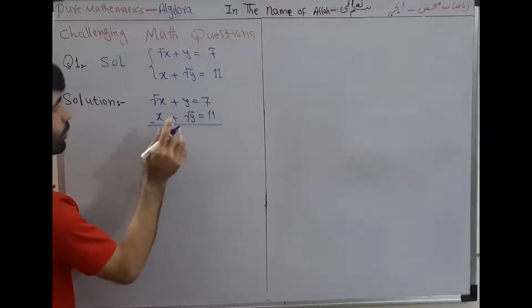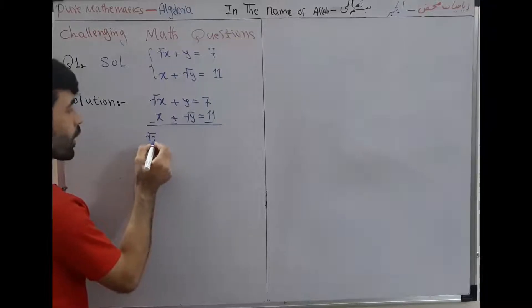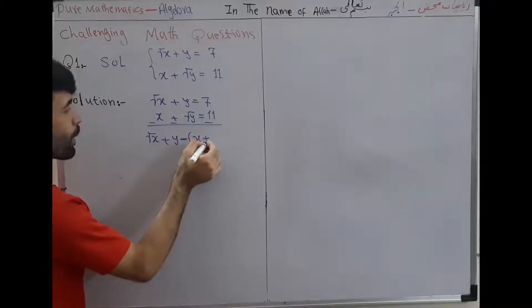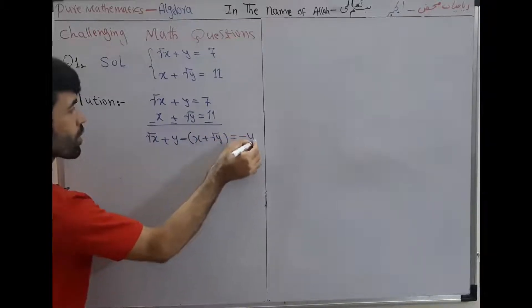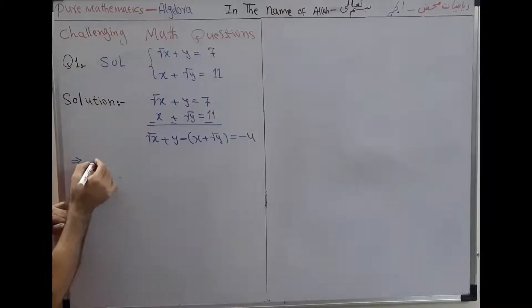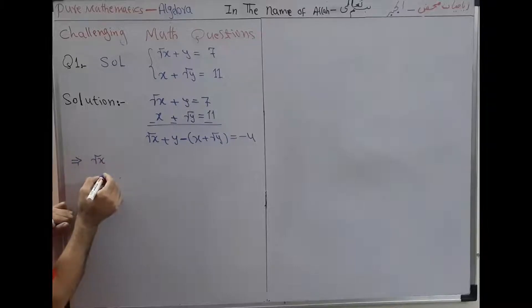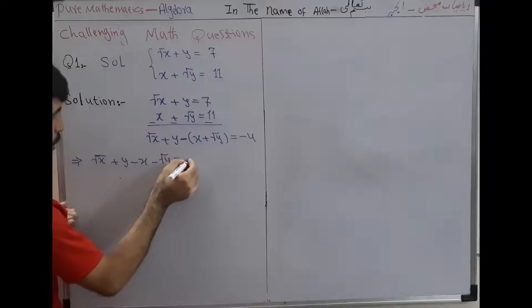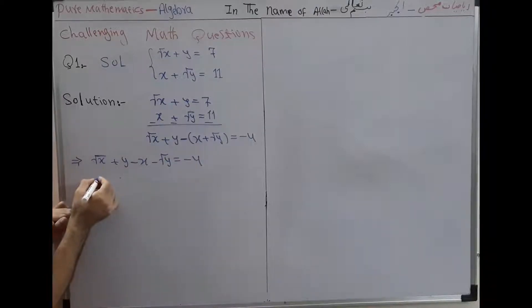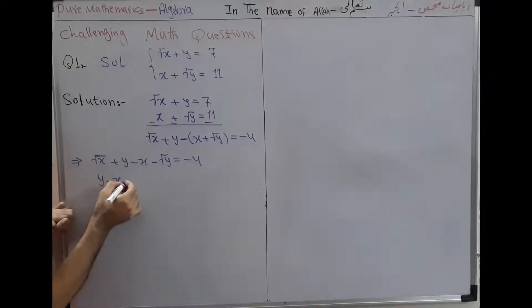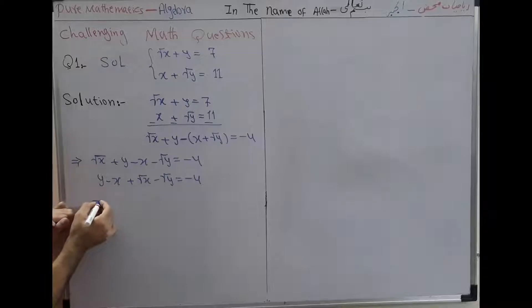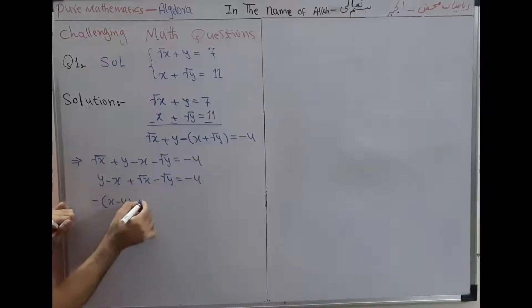We subtract the two equations from the system. We get: square root of x plus y minus x plus square root of y is equal to minus 4. This implies x times square root of x plus y minus x minus square root of y is equal to minus 4. Here we can write y minus x plus square root of x minus square root of y is equal to minus 4.